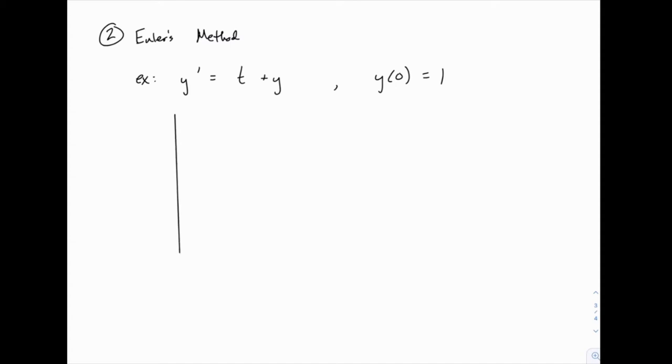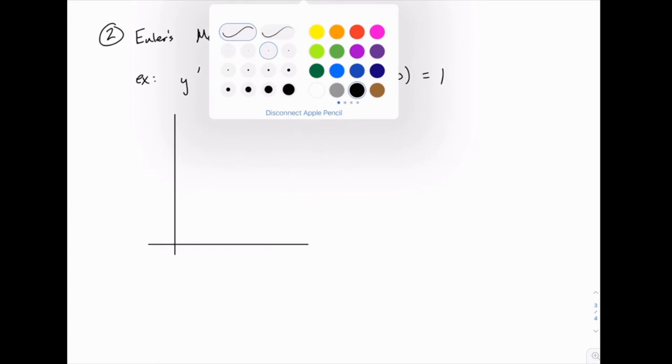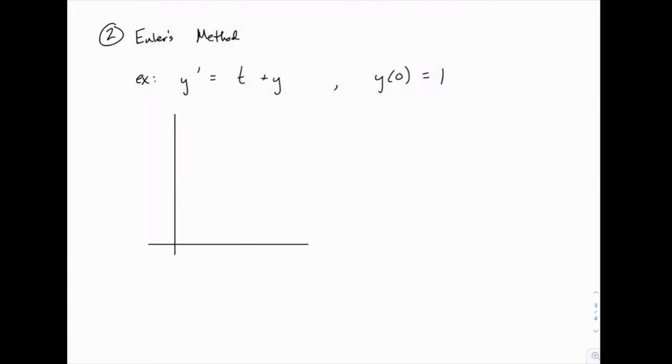So for this differential equation, we don't know what the solution is exactly, but we can imagine that there is an exact solution out there. The initial condition is that y of 0 equals 1, so that would be somewhere up here, and then there is an actual solution, even if we don't know what it is. Let me imagine that the actual solution looks like this. It's this nice perfect curve, but we don't know what that is.